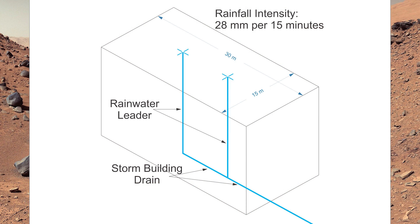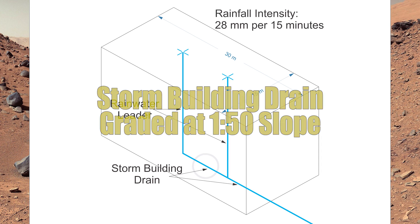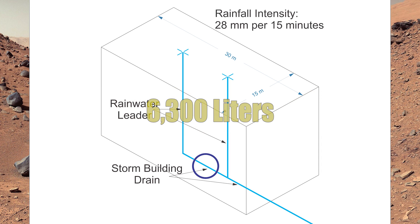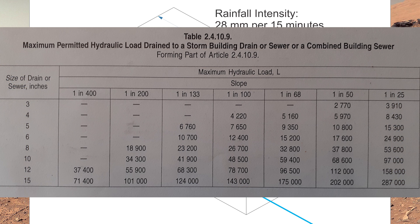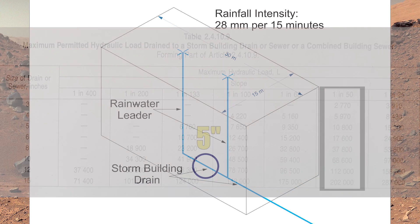As I go horizontal, I have two little sections of storm building drain. They are both graded at 1:50, but that first little leg only has 6,300 liters going through it. So I look in table 2.4.10.9, go down at 1:50 to 10,800 liters, go across, and find out I need a five-inch storm building drain for that first leg.